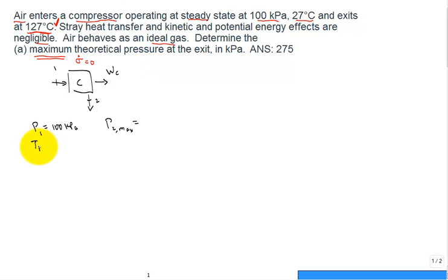Our temperature in is 27 degrees C. Let's convert that right away to 300 kelvin. And the temperature exit is 127 degrees C. Convert it right away to 400 kelvin. So we know our two temperatures, in and out. We know our inlet pressure. We're asked for the maximum theoretical pressure.